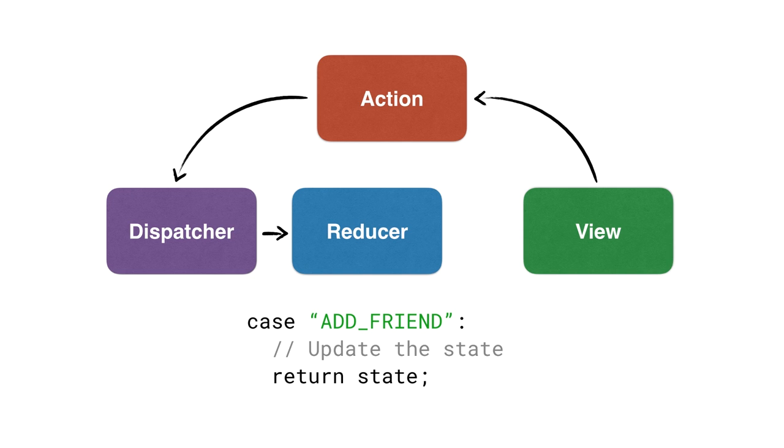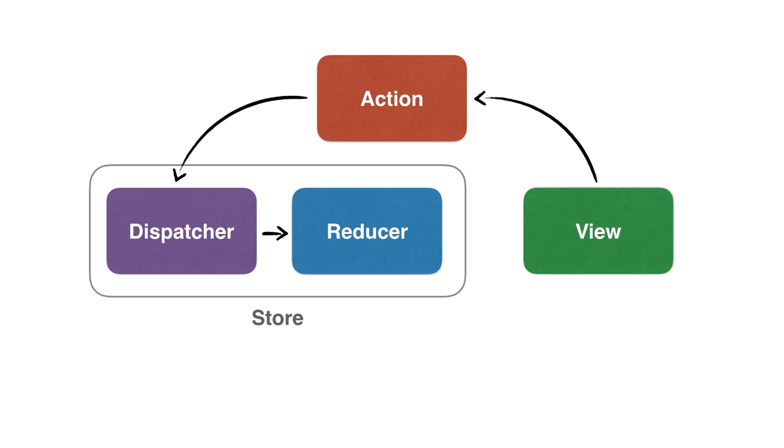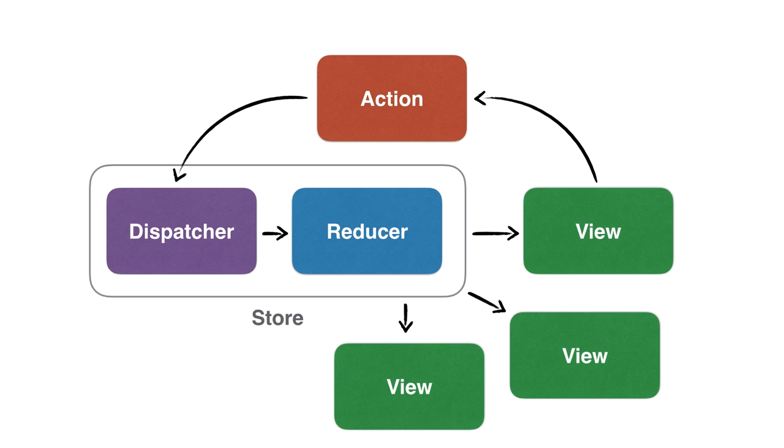Both the dispatcher and the reducer live inside of a structure called the store. Normally when you're building a Redux app, you'll have components that subscribe to updates from the store. Using the Polymer Redux library, that whole subscription flow is automated for us. Basically, the reducer says it's got some new state based on the action that just happened, and the store hands it off to all the views that are listening. The cool thing is we can have multiple views listening to that same store, so component over here can dispatch an action and these other components around it can also get that new state. We keep them decoupled.